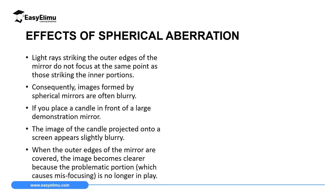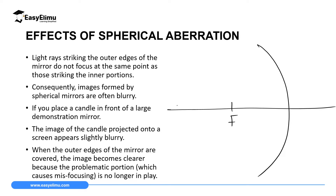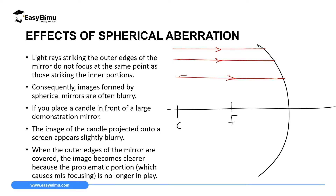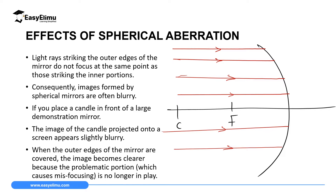One of the effects of spherical aberration is that light striking the outer edge of the mirror does not focus at the same point as light striking the inner portion. For example, if you have your mirror with the principal axis, the focal point F, and center of curvature C, and you draw different rays — a ray very far from the axis, rays crossing the principal axis, rays below — you can see rays at various distances from the mirror's axis.